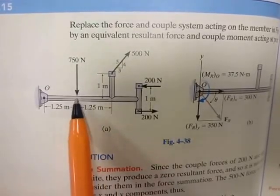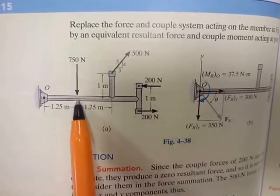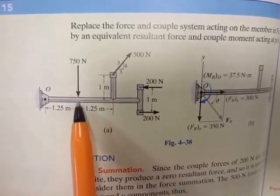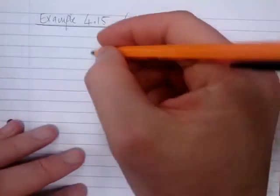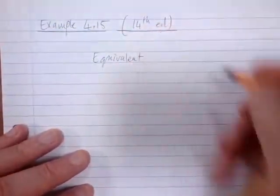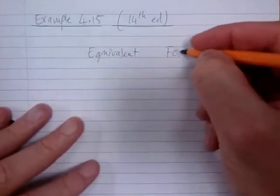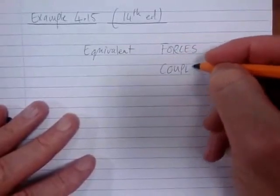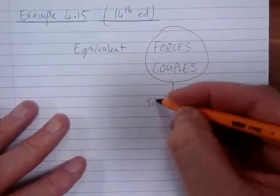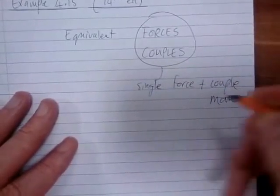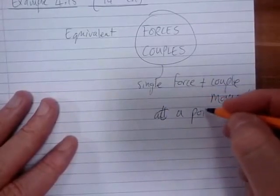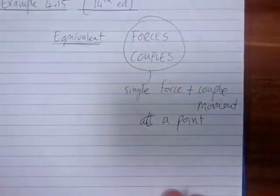For example, if we look at a point along the line of action of the 750, then at that point you will have the effect of the 750 but no rotational effect, because it's along the line of action of that force. Essentially, when we're trying to find the equivalent system, we're trying to simplify the forces and couples acting on a system into a single force plus couple moment at a specific point.